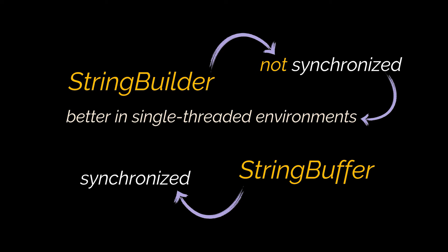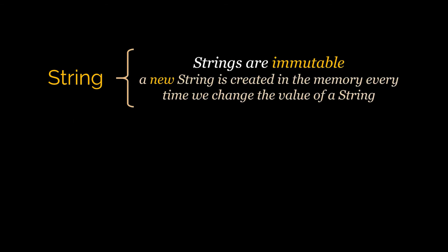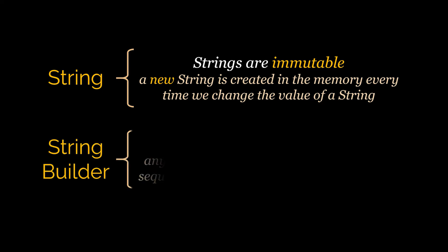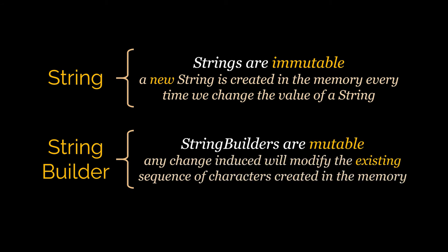Now to the main event: the differences between String and StringBuilder. The major distinction is that strings are immutable, which means that every time we change their value or perform any operation that may induce change on them, it creates a new string in memory where that change is stored. On the other hand, StringBuilders are mutable, meaning any change induced on them will modify the existing sequence of characters in memory.